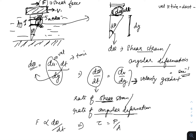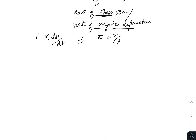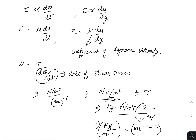The unit of du/dy (velocity gradient) is 1/second or s⁻¹. Shear stress τ = F/Area is proportional to dθ/dt, which equals du/dy. Removing the proportionality gives a constant μ (nu), called the coefficient of dynamic viscosity: μ = τ / (dθ/dt). The unit of τ is N/m² and of dθ/dt is s⁻¹, so the SI unit of dynamic viscosity becomes N·s/m².